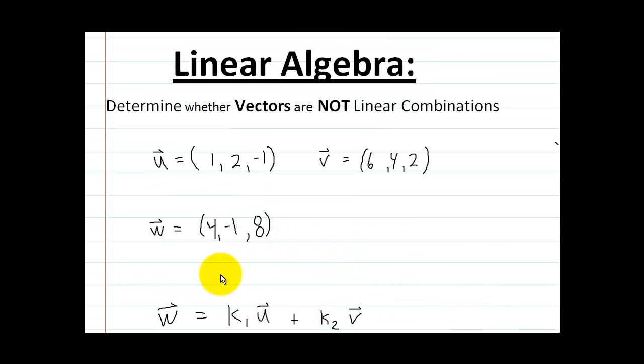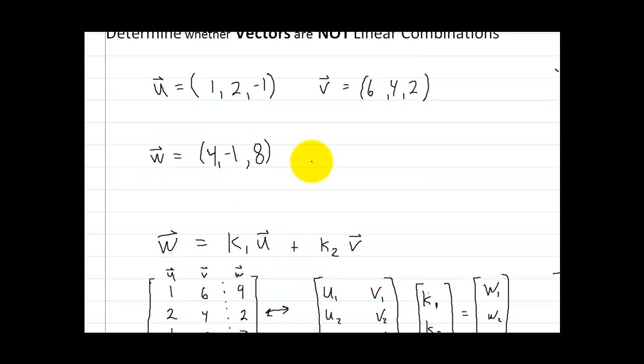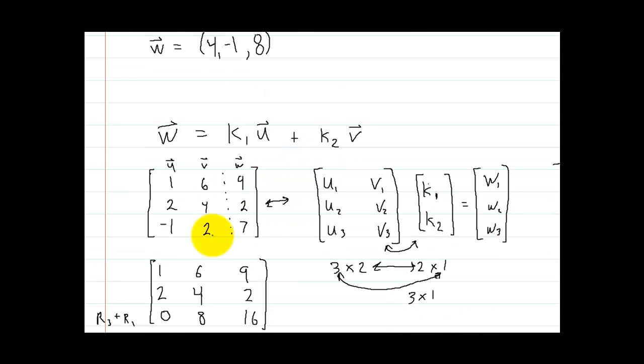So anyhow, now that we've got that, let's go ahead and solve this problem over here. So here we're doing this one. We're going to determine whether the vectors are not linear combinations. So here I change the values of this vector. And what we want to know is, is u, the vector u, and the vector v, are these? Can I multiply these by some scalar in order to get w? So is w, the vector w, is this a linear combination of vector u and vector v? So let's go ahead and solve that. So this is for the previous one. I'm just going to delete all this. We don't need it anymore.